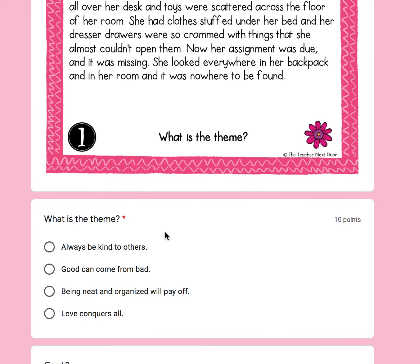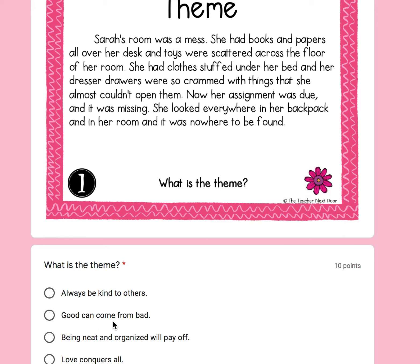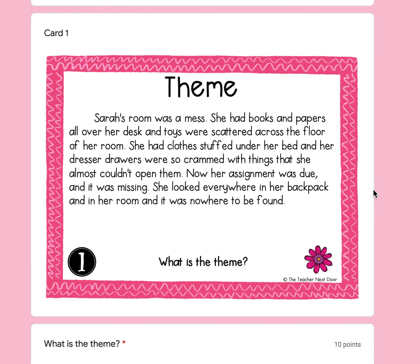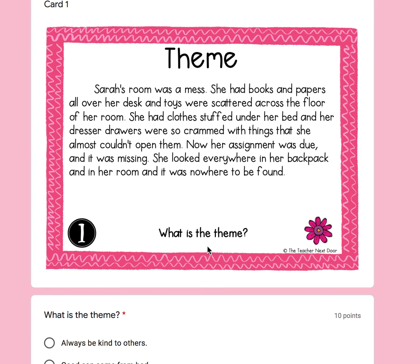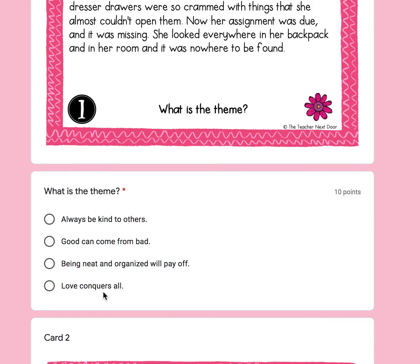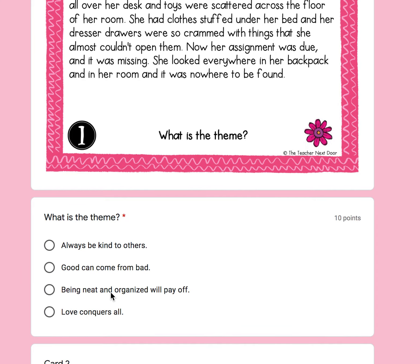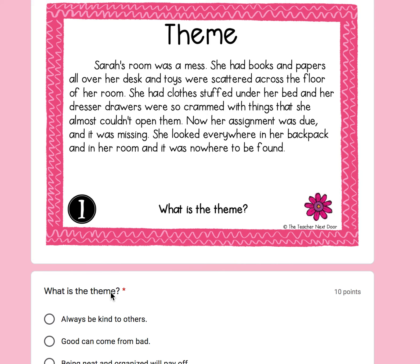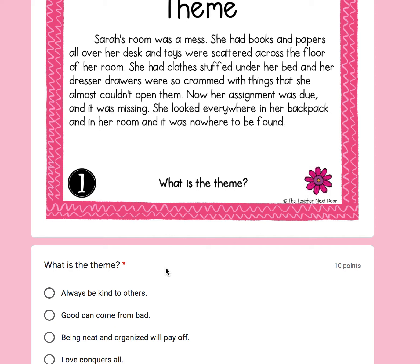Is it A, always be kind to others? Sarah is very messy and she couldn't find her assignment, so it can't be always be kind to others. B, good can come from bad? It didn't mention anything about her making good or bad choices, so it's not B. C, being neat and organized will pay off? Or D, love conquers all? The story did not mention anything about love. So it's going to be C — being neat and organized will pay off. Because if she has her room organized next time and something is missing, she'll know exactly where it is. Miss Sarah is going to learn to be neat and organized, and that's going to pay off.